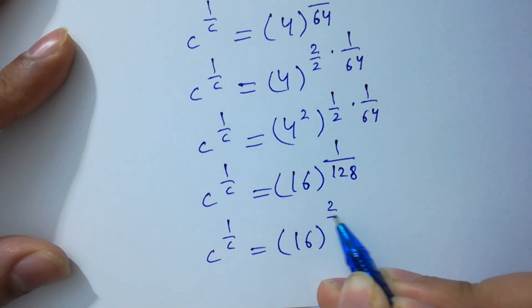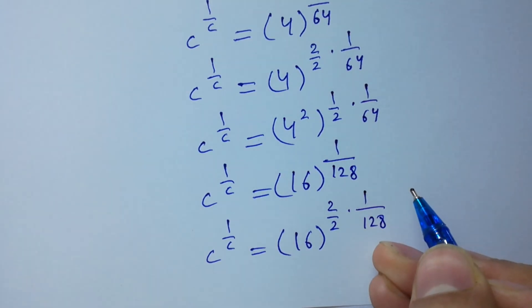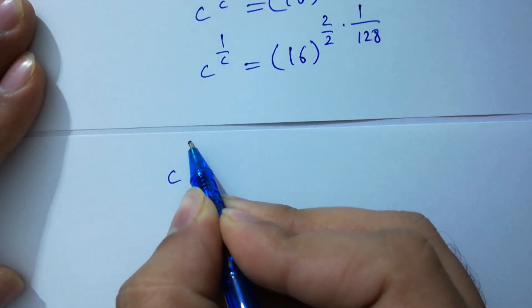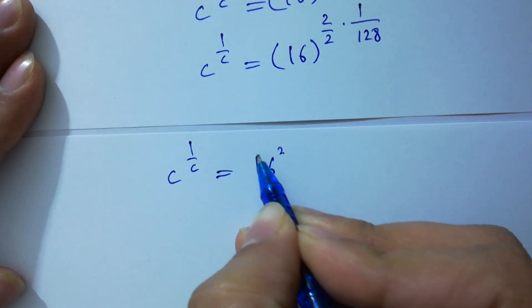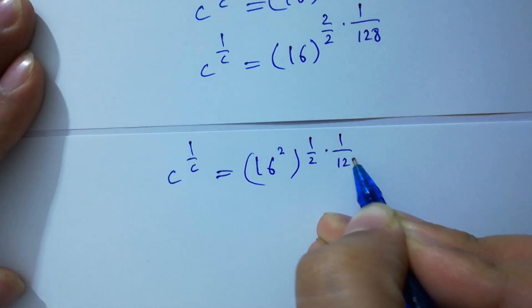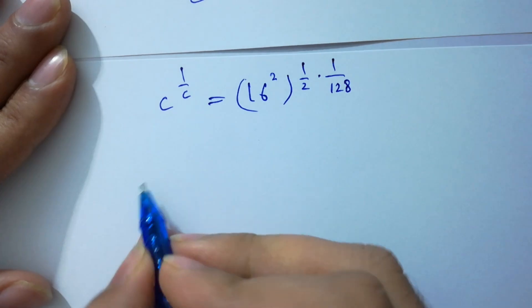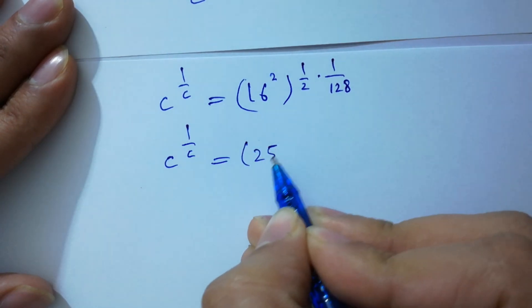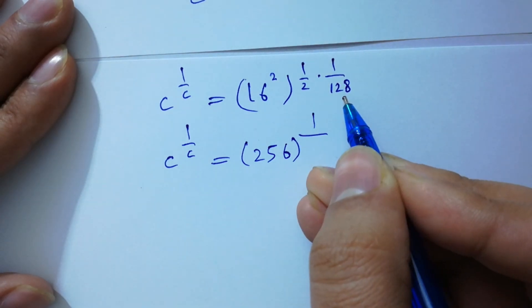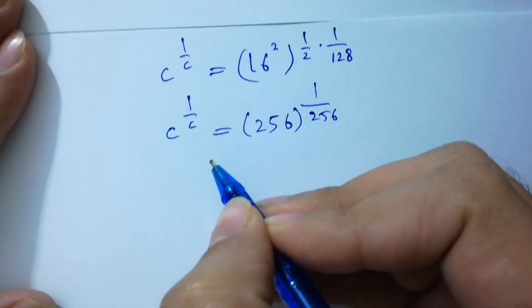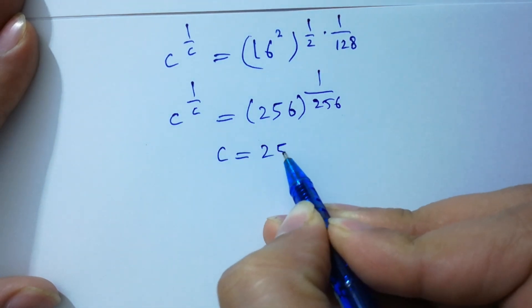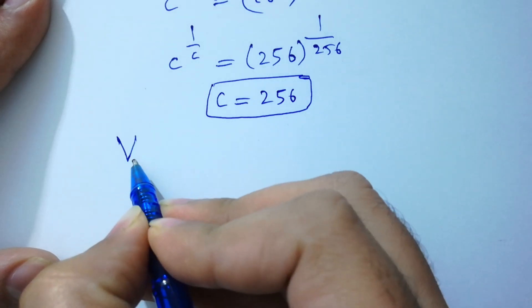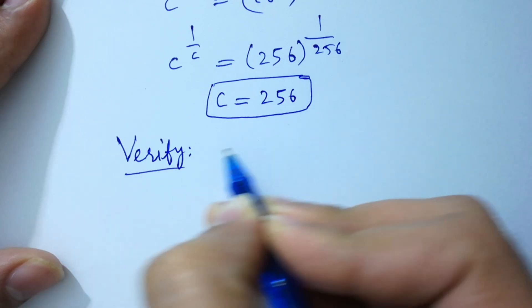Again, we have C to the power 1 over C with 2 over 2 times 1 over 128. We get C to the power 1 over C equal to 1 over 128. Then C to the power 1 over C equal to 16 times 16, which is 256, to the power 1 over 2 times 128, which is 256. This shows that C equals 256, which is our final answer.